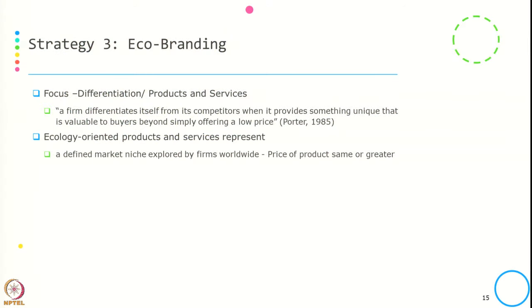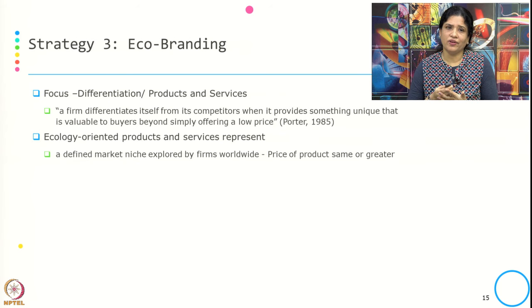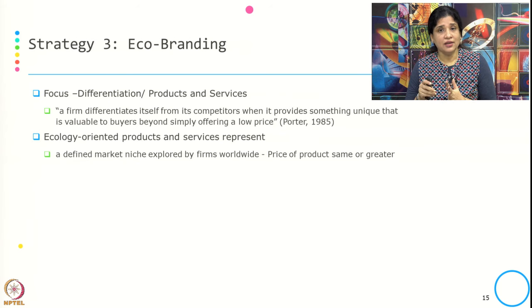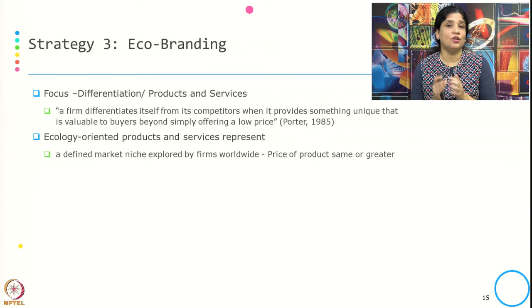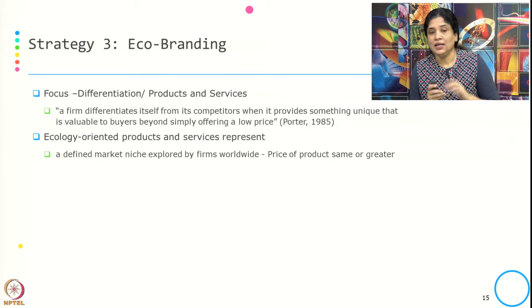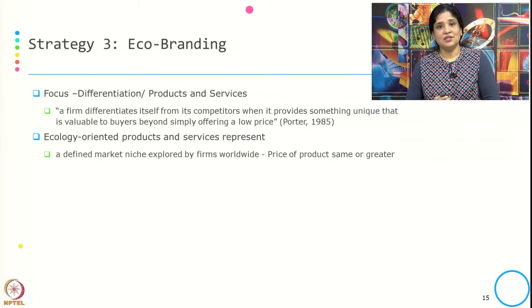The third strategy is eco branding. The focus of this strategy is creating a differentiation in the product and services. If you remember the last two strategies we discussed, the changes needed were over the process — both in eco-efficiency and beyond compliance leadership. But in the case of eco branding, even though the focus is differentiation, the changes needed are on the product and services.